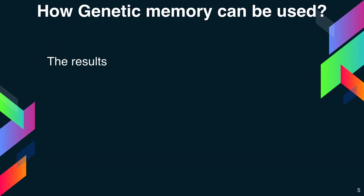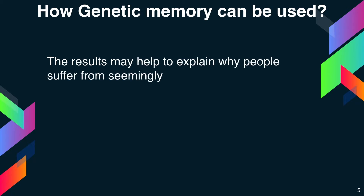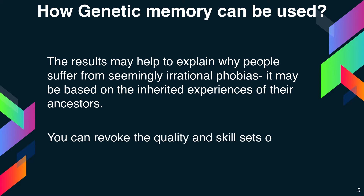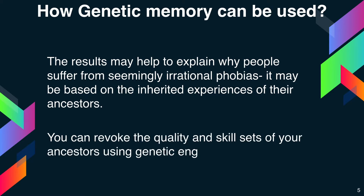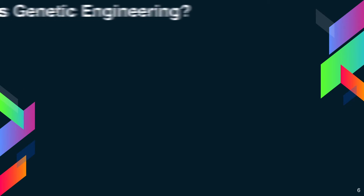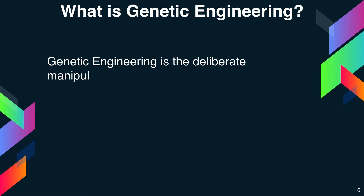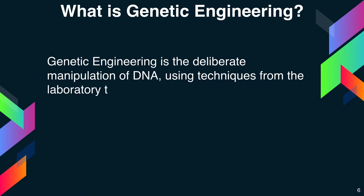The results may help explain why people suffer from seemingly irrational phobias — it may be based on the inherited experiences of their ancestors. You can revoke the qualities and skillsets of your ancestors using genetic engineering. Genetic engineering is the deliberate manipulation of DNA using laboratory techniques to alter genes in organisms.